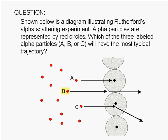In choice A, we have a head-on collision between the alpha particle and the nucleus. Strong repulsions lead to backscattering of the alpha particle.